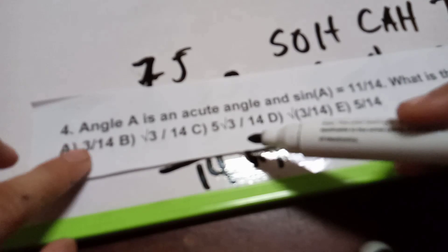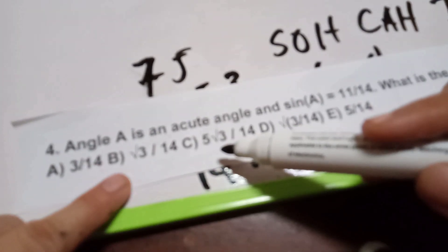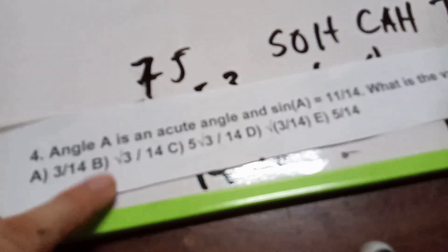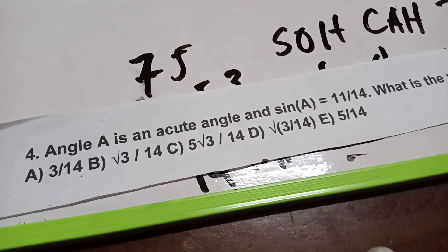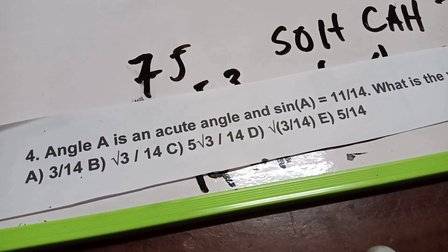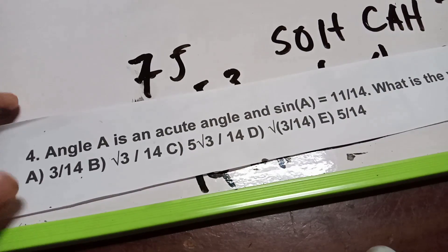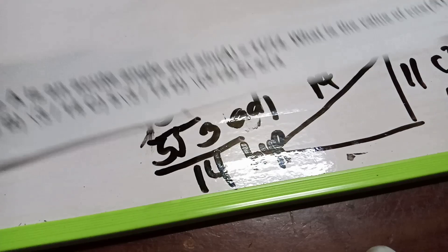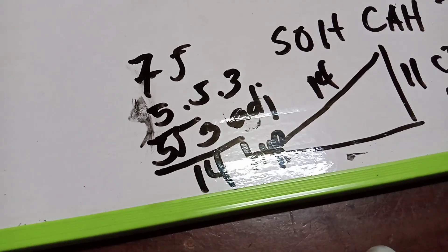So cosine A equals the adjacent over hypotenuse, which is 5√3 over 14. The answer is letter C. Remember to understand SOH-CAH-TOA and the Pythagorean theorem to solve these types of problems.